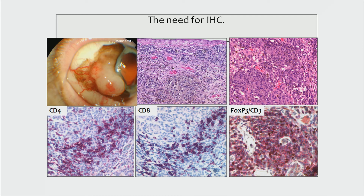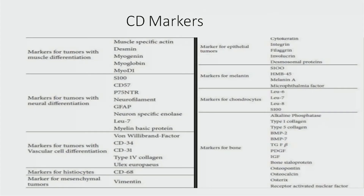This photograph depicts the need for immunohistochemistry in ophthalmology. In order to differentiate tumors based on their lineage, CD markers have a very important role to play. There are very specific markers for tumors with muscle differentiation, neural differentiation, vascular cell differentiation, histiocytes, mesenchymal tumors, epithelial tumors, melanin, and chondrocytes and bone — all helping to make the diagnosis.